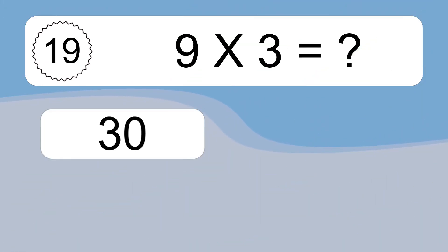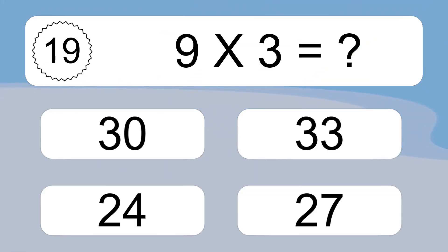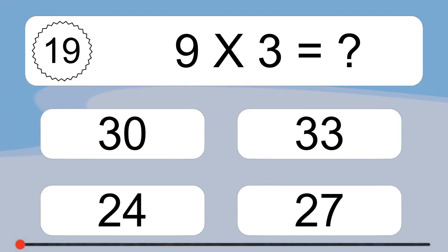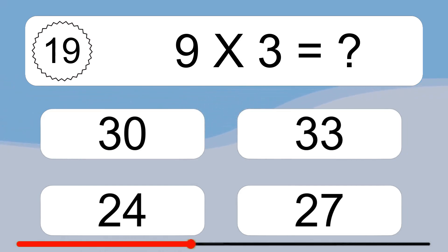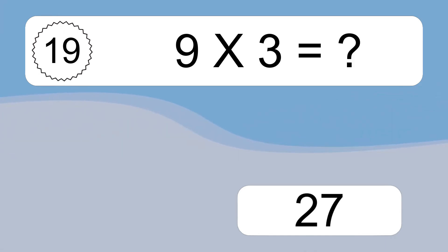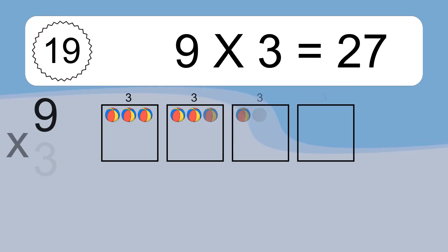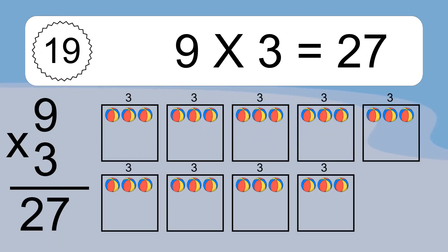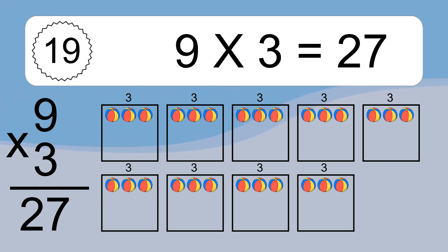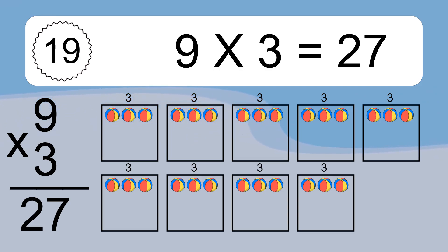9 times 3 equals what? 9 times 3 equals 27. We have 9 boxes, and each box has 3 colorful balls inside. If you count all the balls in all the boxes together, you will have 9 times 3 balls. This equals 27 balls.